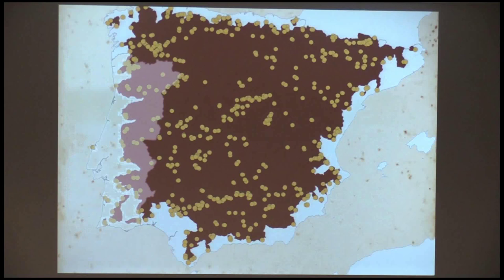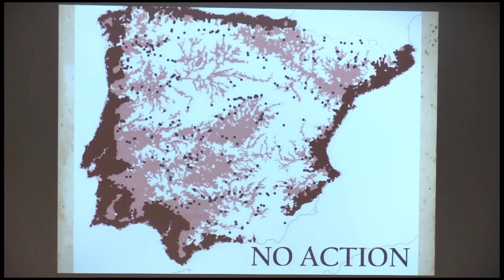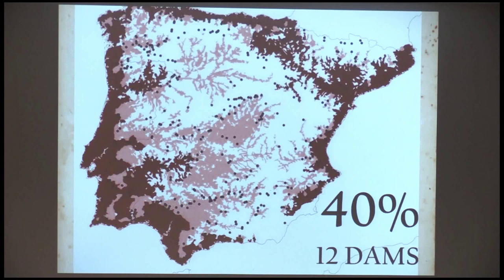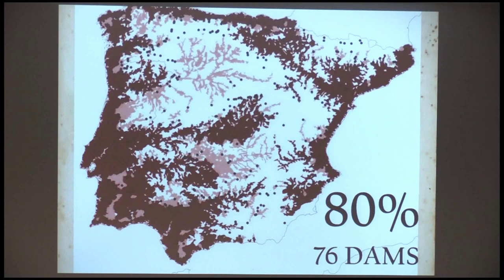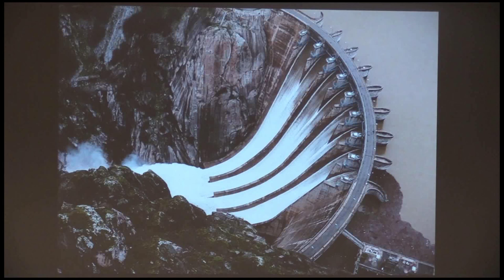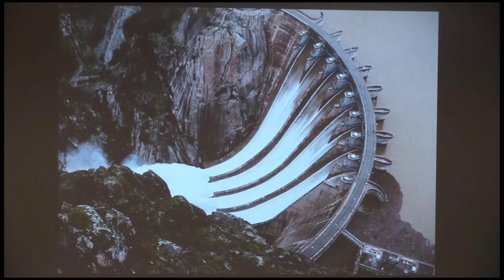We use this as a reference scenario. We then overlaid the distribution of large dams in Spain — the brown area being inaccessible for any fish coming from the sea — onto the suitable area for the eel. Our question was: how many dams would we need to act on to recover a given amount of suitable area? To recover 40%, we should make 12 dams permeable. To recover 60%, 20 dams. To recover 80%, 26 large dams. Of course, that's not easy — some dams are very difficult or completely impossible to make permeable downstream — so we need to introduce other factors like dam description into the optimization protocol.